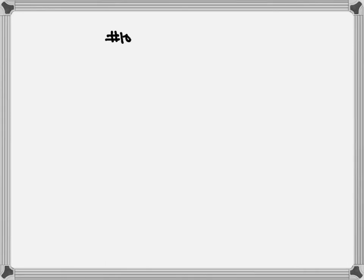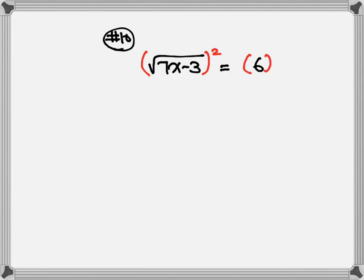Let's look at number 10. Number 10: we have square root of 7x minus 3 is equal to 6. Again, we're going to square both sides of the equation. The square root and the square cancel out — no more square root. Just write down the number inside. So, 7x minus 3 is equal to 36.